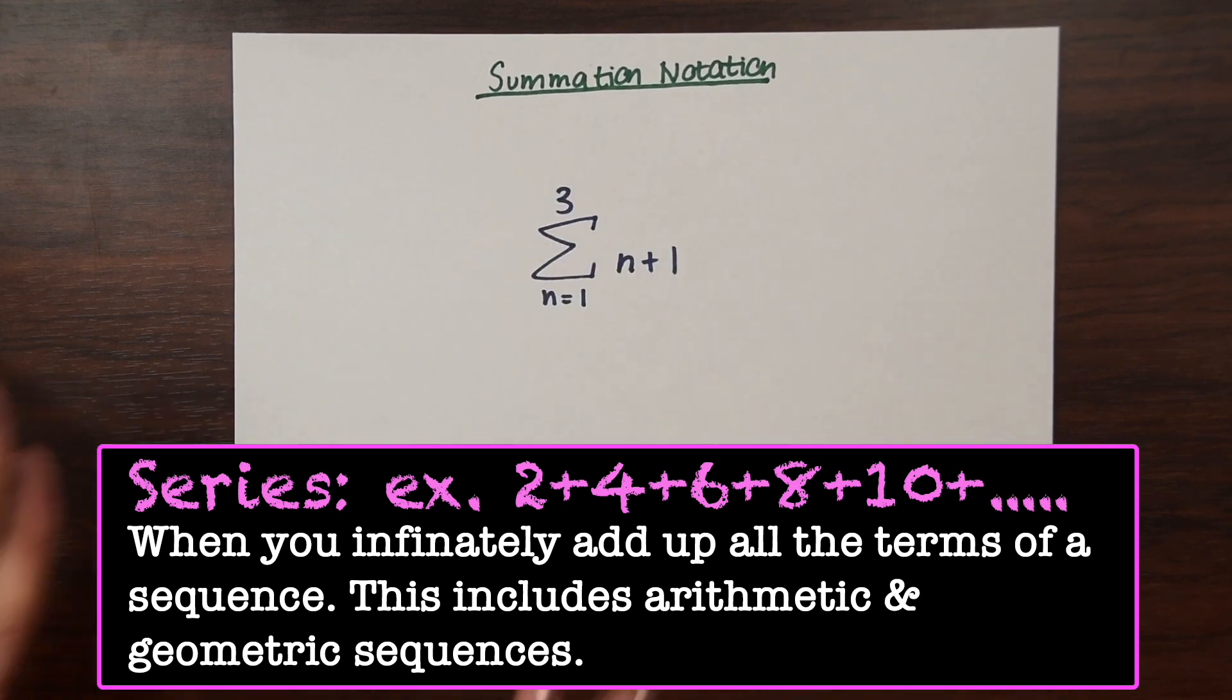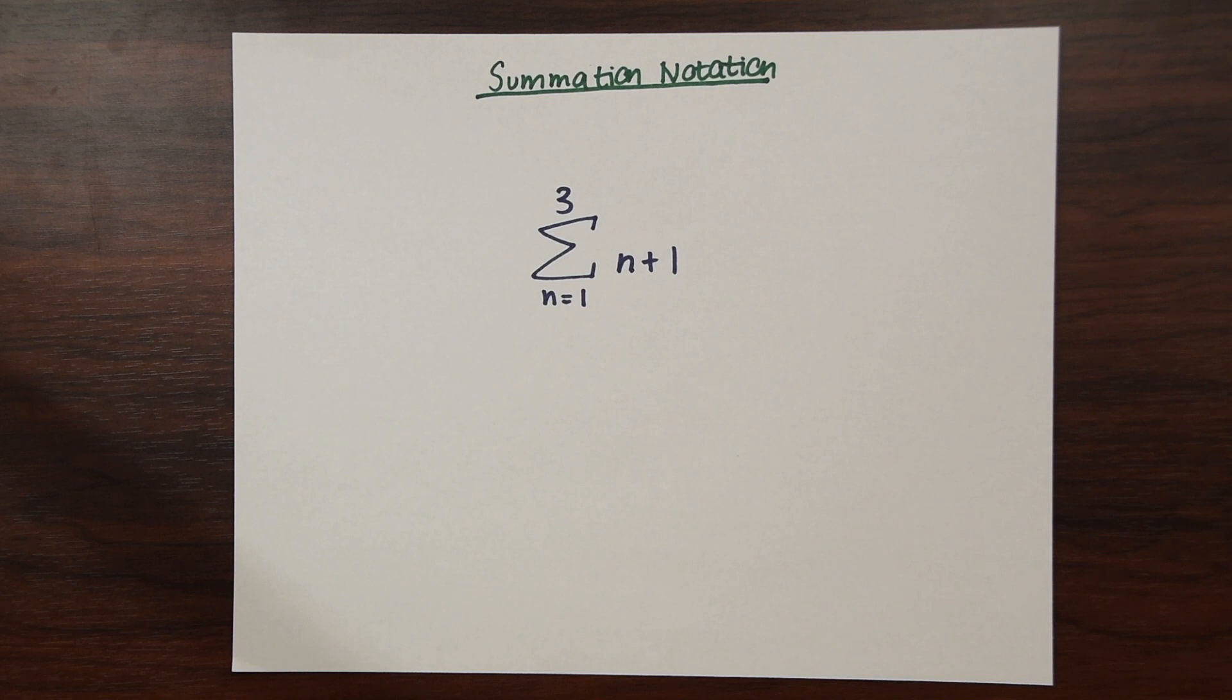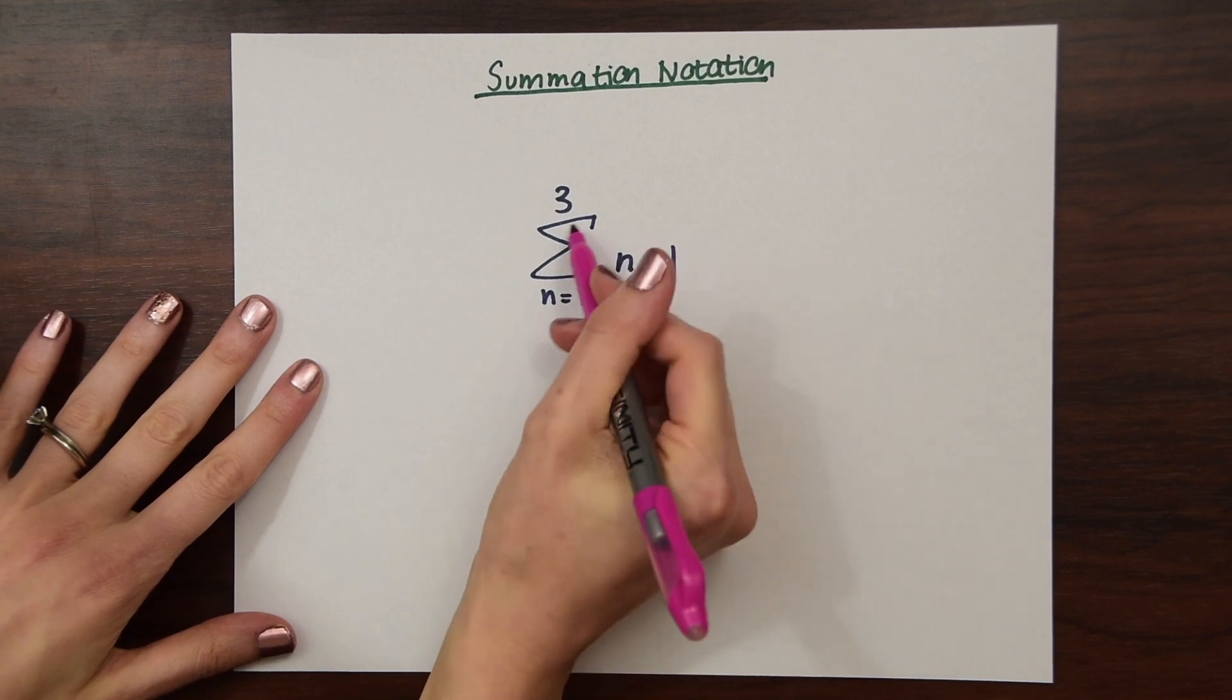We could easily write that in shorthand. Before we get into that, because that's a different kind of more advanced topic, let's first get through this video. This is just on how to recognize what summation notation is and how to calculate what it means. So we're just going to identify each part of this notation right here. So if you notice, this is our sigma.